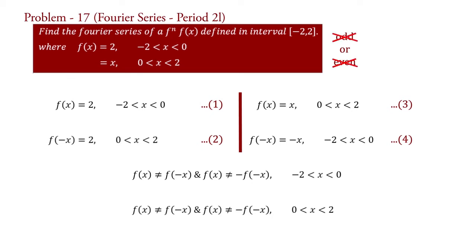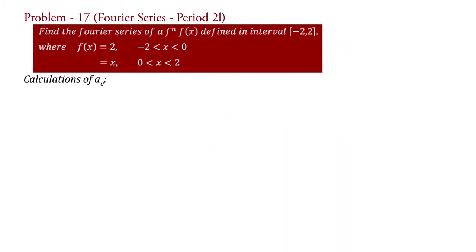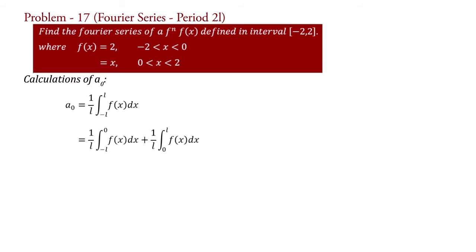Therefore, we have to calculate all three coefficients a0, an, and bn for representation of the given function in Fourier series. For a0: a0 equal to 1 upon L integral minus L to L f(x) dx. Since f(x) is divided into two parts, we will write a0 equal to 1 upon L integral minus L to 0 f(x) dx plus 1 upon L integral 0 to L f(x) dx. Putting the values of f(x) and L equal to 2.